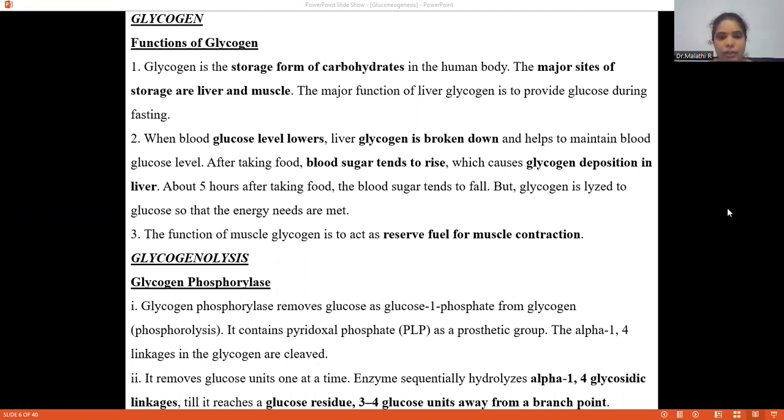The function of muscle glycogen is to act as a reserve for muscle contraction. Let us begin with glycogenolysis. How the glycogenolysis process is used to release the glucose into the blood whenever the glucose concentration tends to get lower.